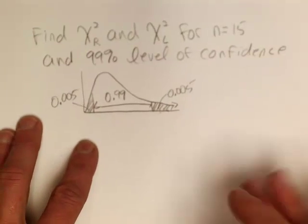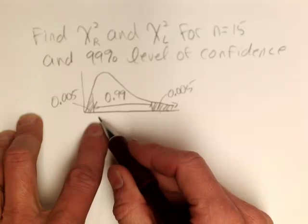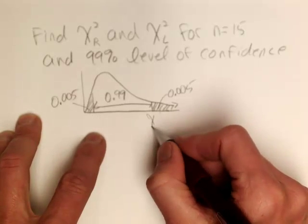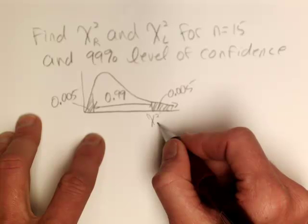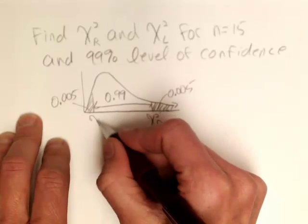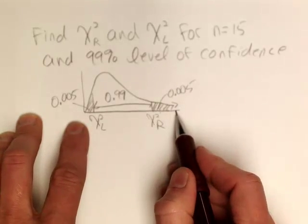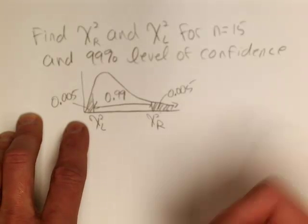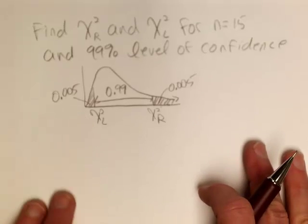Because this distribution is not symmetric, I can't just find one of these values and take the opposite. They're both going to be positive, because the chi-square distribution only takes on non-negative values. It's the sampling distribution for the standard deviation, and standard deviation can never be negative.